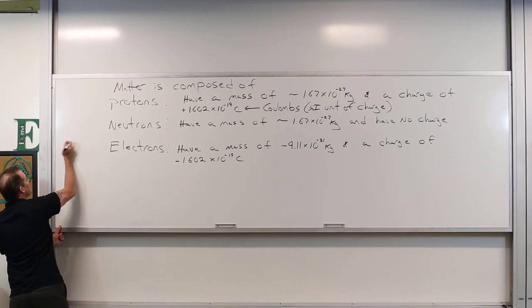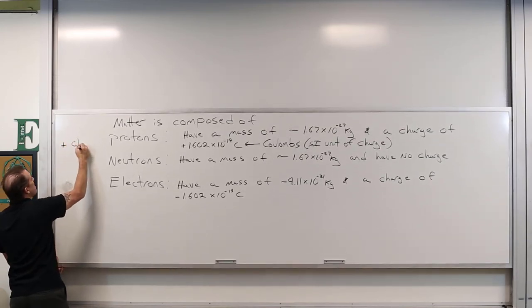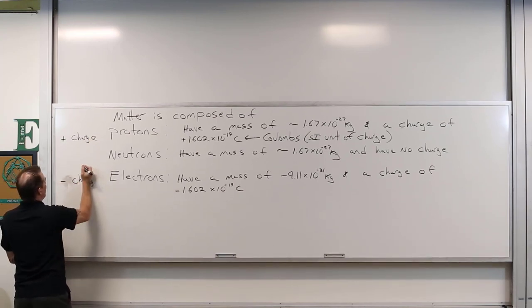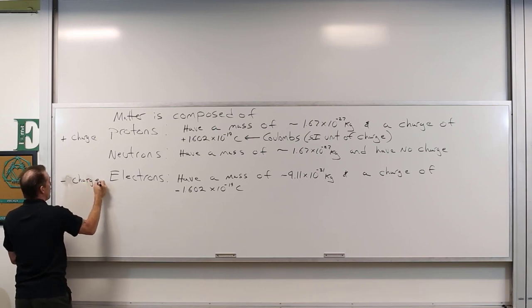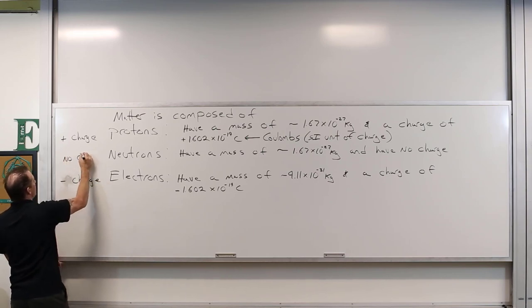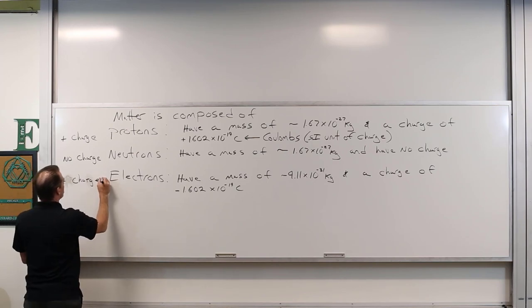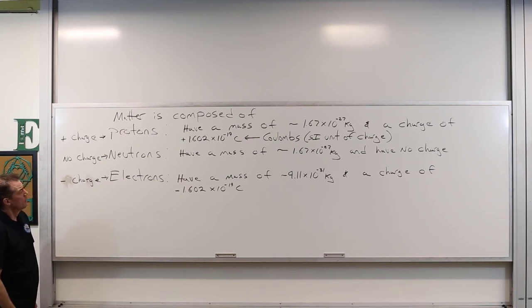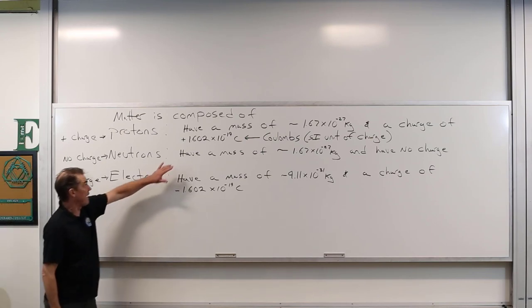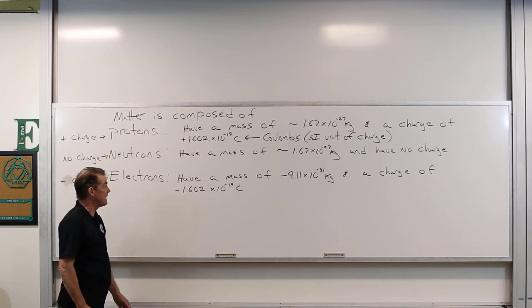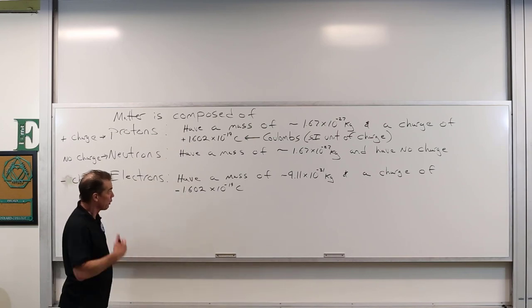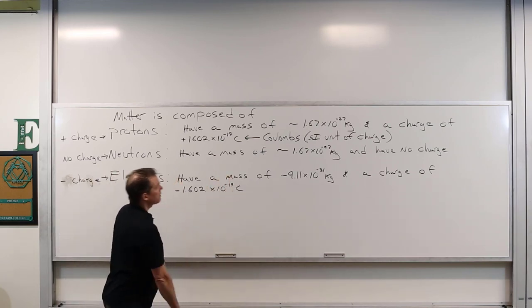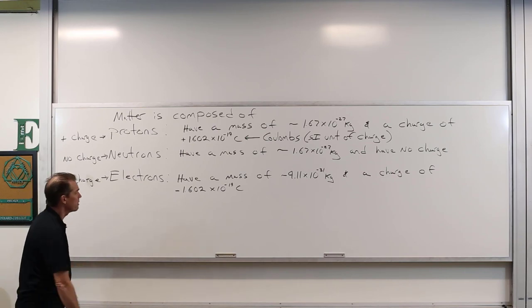So to summarize: protons have plus charge, electrons have minus charge, neutrons have no charge. The value 1.602 × 10⁻¹⁹ is going to get ingrained in your memory because we'll use it a whole bunch. The masses we'll use here and there. We don't do much with neutrons because we're mostly concerned with charged particles.